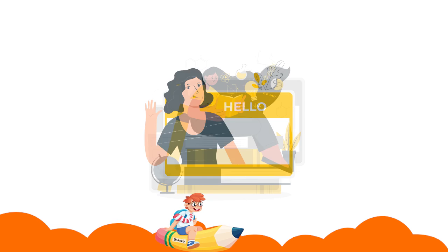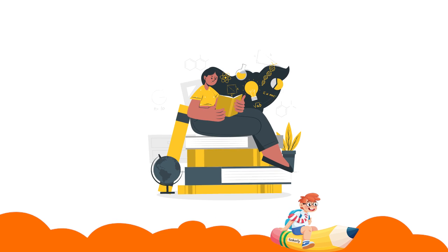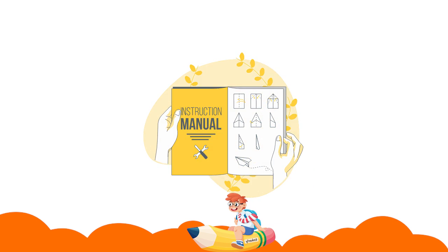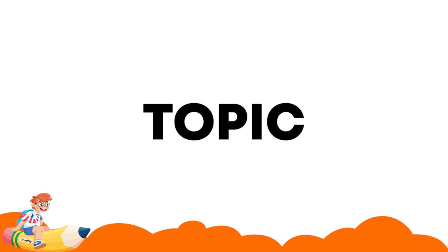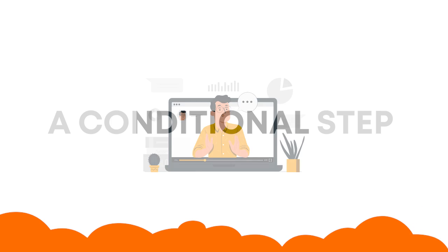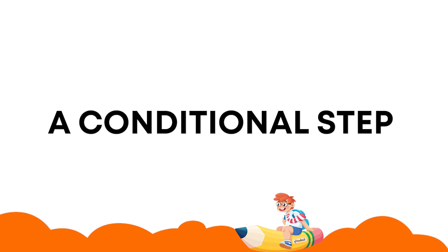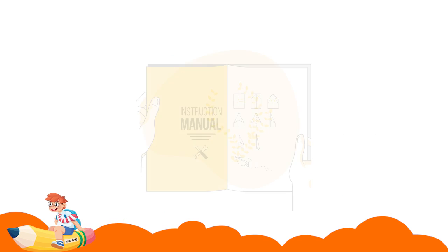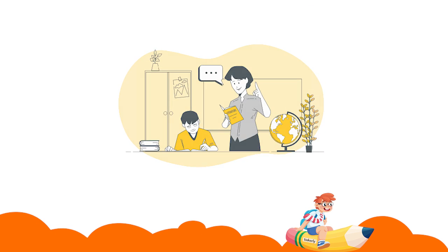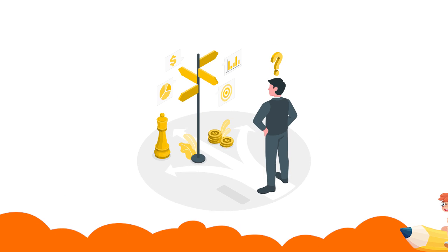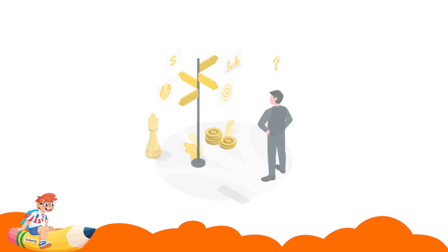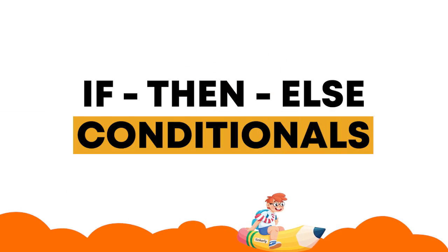Hey everyone! We know by now that computers can follow only logical instructions in a sequence. Moving on to the next topic, we will learn about conditionals. A conditional step is a set of logical instructions that allow the computer to handle different decisions. It will let the program continue based on the decisions made.